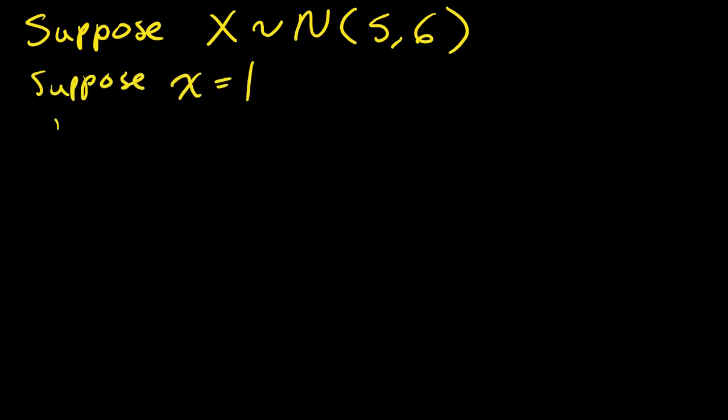Then there's another example. Suppose, once again, we still have the same random variable X normally distributed with mean 5, standard deviation 6. But now, suppose we have a little x that equals 1, and we want to find z.